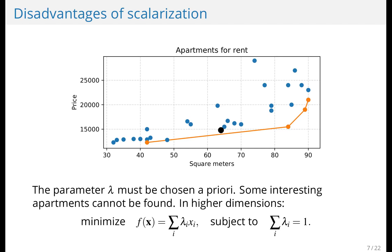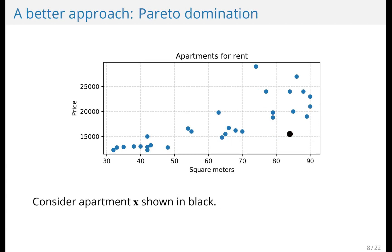Some interesting apartments, such as the one shown in black, will not be found by this approach. In higher dimensions we have some trouble because we have to choose a lot of values. There's more freedom in the lambdas, so we have to choose more values and we have to repeat this procedure many times. There's a better approach based on Pareto domination.